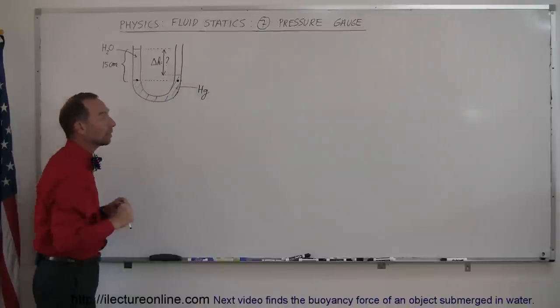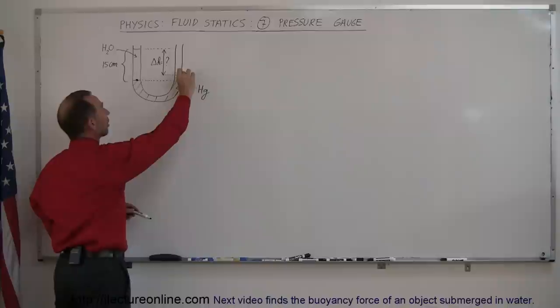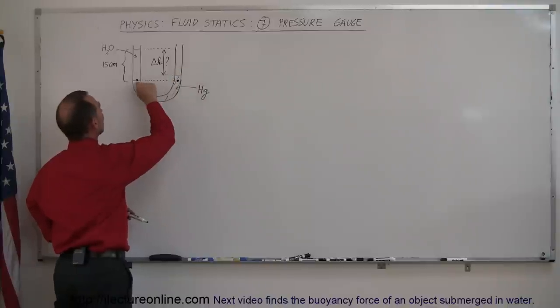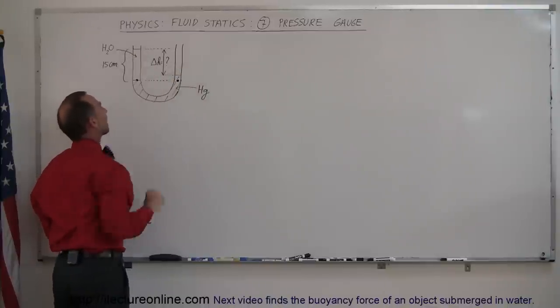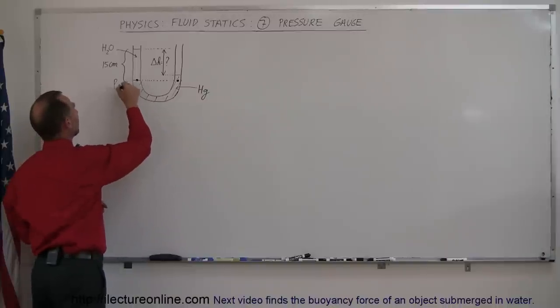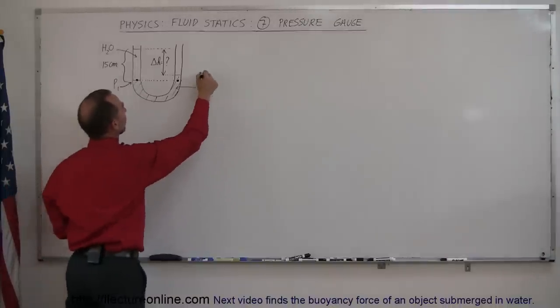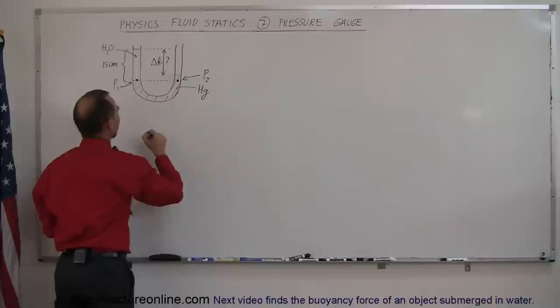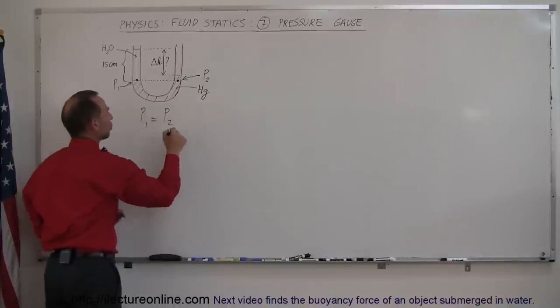Which means that the pressure over here is caused by this height of mercury and the pressure over here is caused by this height of the water. So if I call this pressure 1 at this location and I call this pressure 2 at this location, I can say that pressure 1 equals pressure 2.